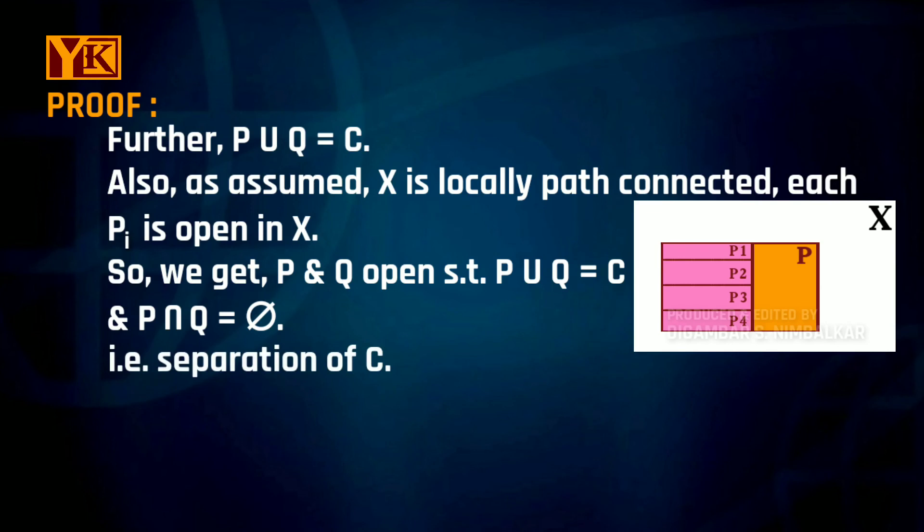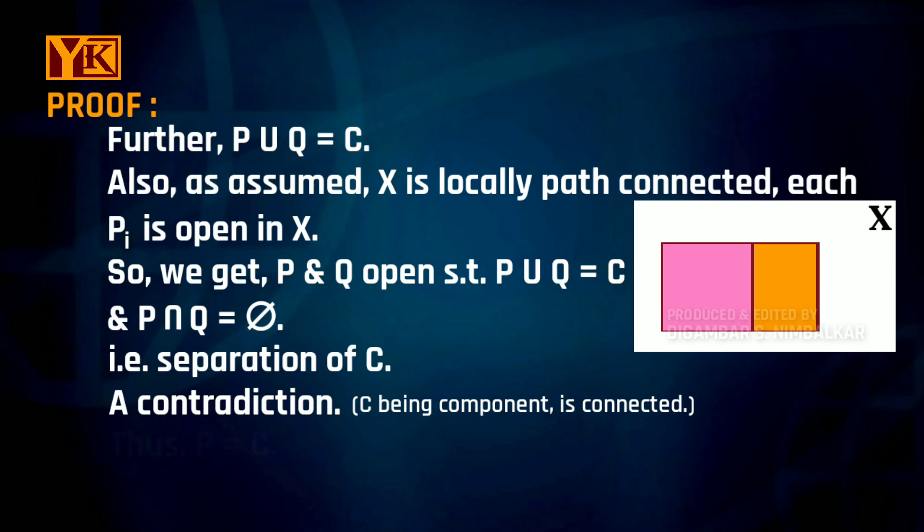So what does this mean? P and Q form a separation of C, which is a contradiction as C is a component and therefore C is connected. Therefore, P has to be equal to C.